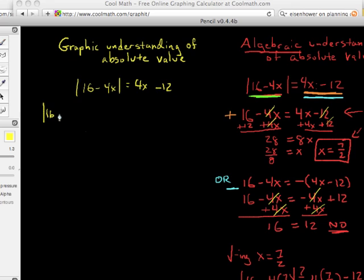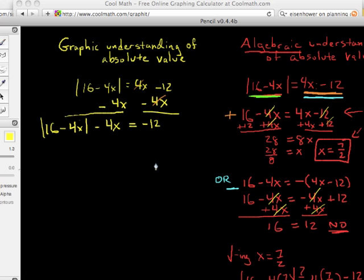So, it's true that the absolute value of 16 minus 4x minus 4x is equal to negative 12. How did, what did I do? All I did was subtract 4x. I should probably make that more clear. Let's do that. Let's minus, or subtract 4x from both sides. Okay, now, this minus 4x is not going to go inside that absolute value, and I know what you're thinking.